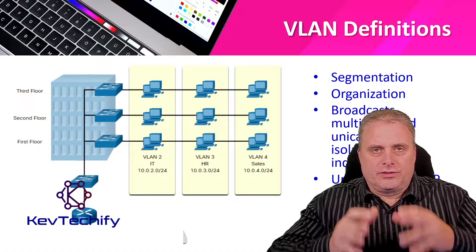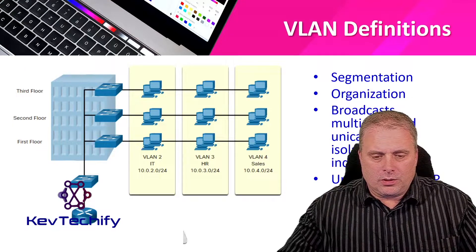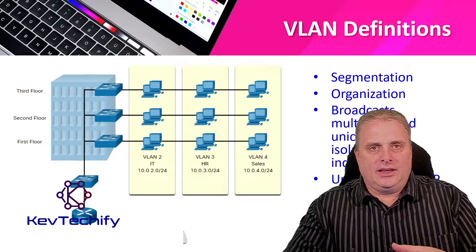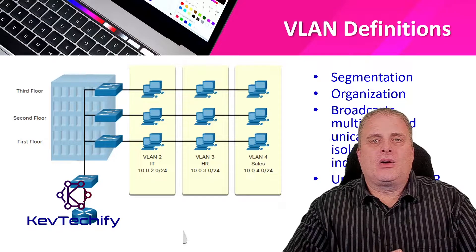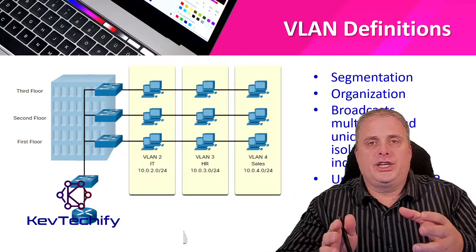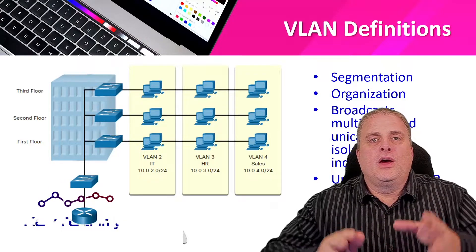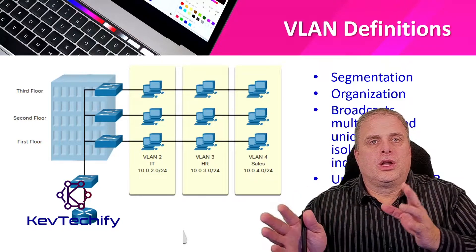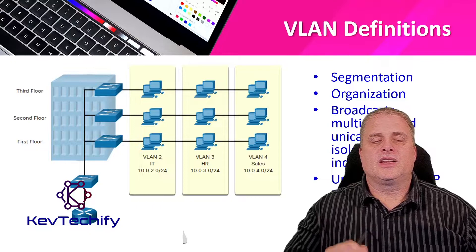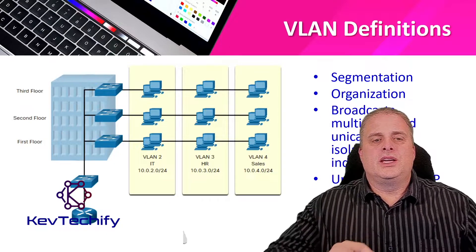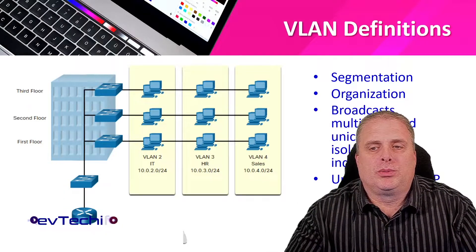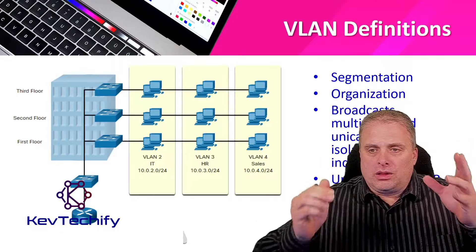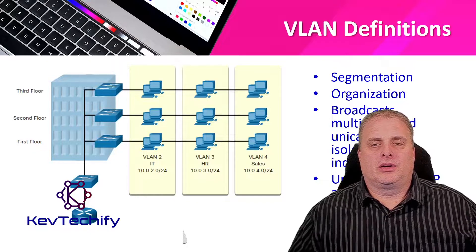A VLAN is a virtual LAN — a virtual local area network. Up until now, we've talked about local area networks, where all devices connected into a switch belong to that LAN and share the same network address. Now, instead of having each switch be a different LAN itself, we're going to create these virtual LANs. These virtual LANs can span multiple switches, multiple floors, or locations. VLANs allow us to have segmentation on our network, making it into smaller, more manageable pieces organized in a way that makes sense for us.